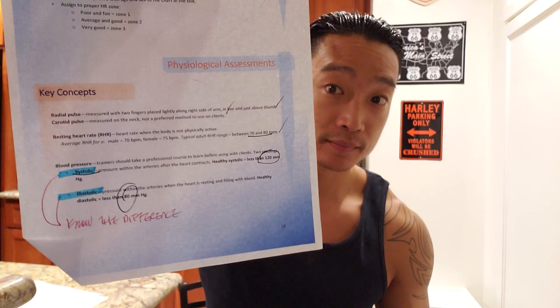Still on page 18, for the physiological assessment, the two big terms are systolic and diastolic blood pressure — know the difference between the two. Also be familiar with the radial pulse, the carotid pulse, and resting heart rate. That brings us to page 19.